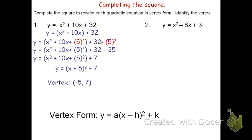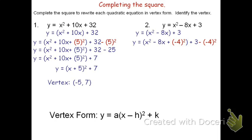To begin problem 2, we'll again group any of the terms that have x's. We get y equals the quantity x squared minus 8x plus 3. Making the biggest square we can using x squared minus 8x, we'll split the negative 8x up. Half of negative 8 is negative 4, so we'll say it's the quantity x squared minus 8x plus negative 4 squared. If I'm adding negative 4 squared, I also need to subtract negative 4 squared to balance the equation. Negative 4 squared is 16, so I'll get 3 minus 16 at the end, and 3 minus 16 is negative 13.